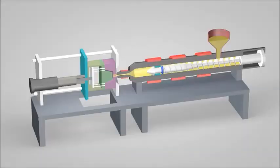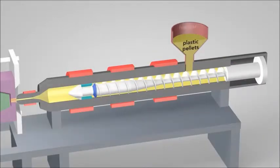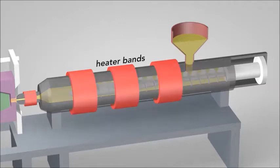The injection molding machine has three main parts: the injection unit, the mold, and the clamp. Plastic pellets in the hopper feed into the barrel of the injection unit. Inside the barrel, a screw transports the pellets forward. Heater bands wrapped around the barrel warm up the plastic pellets.